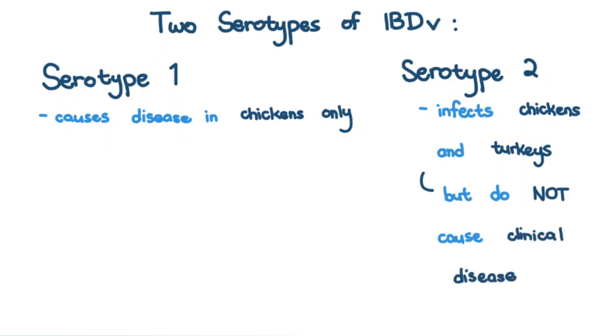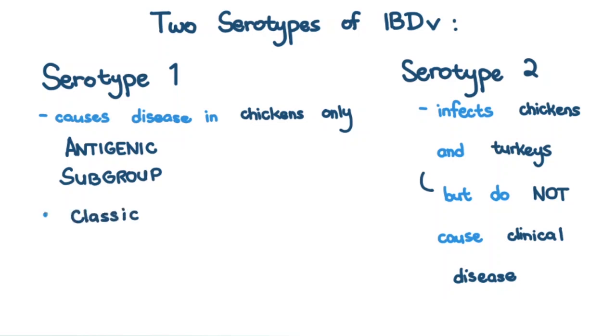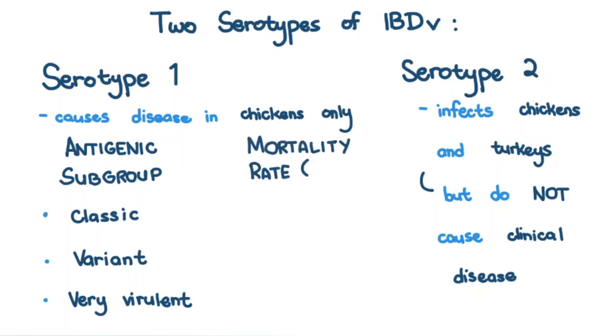Serotype 1 has three antigenic subgroups: classic, variant, and very virulent, with the following mortality rates.